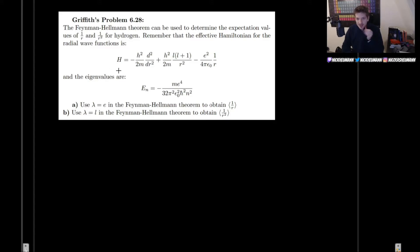So, this problem states the following. It says that the Feynman-Hellman theorem can be used to determine the expectation values of 1 over r and 1 over r squared for hydrogen. Remember that the effective Hamiltonian for the radial wave function is this beast right there, which we have found in the first course in quantum mechanics. And the eigenvalues are this right there, which we have also found in the first part of this course, except that maybe you saw this in terms of the Bohr radius, but it's the same thing as this.